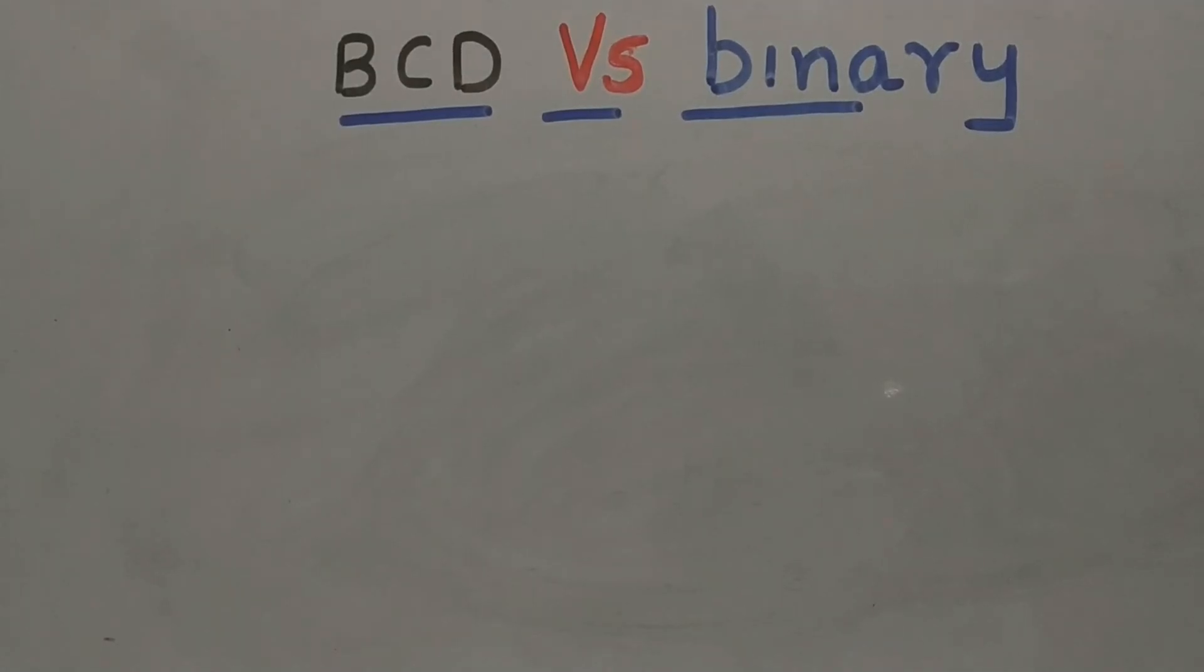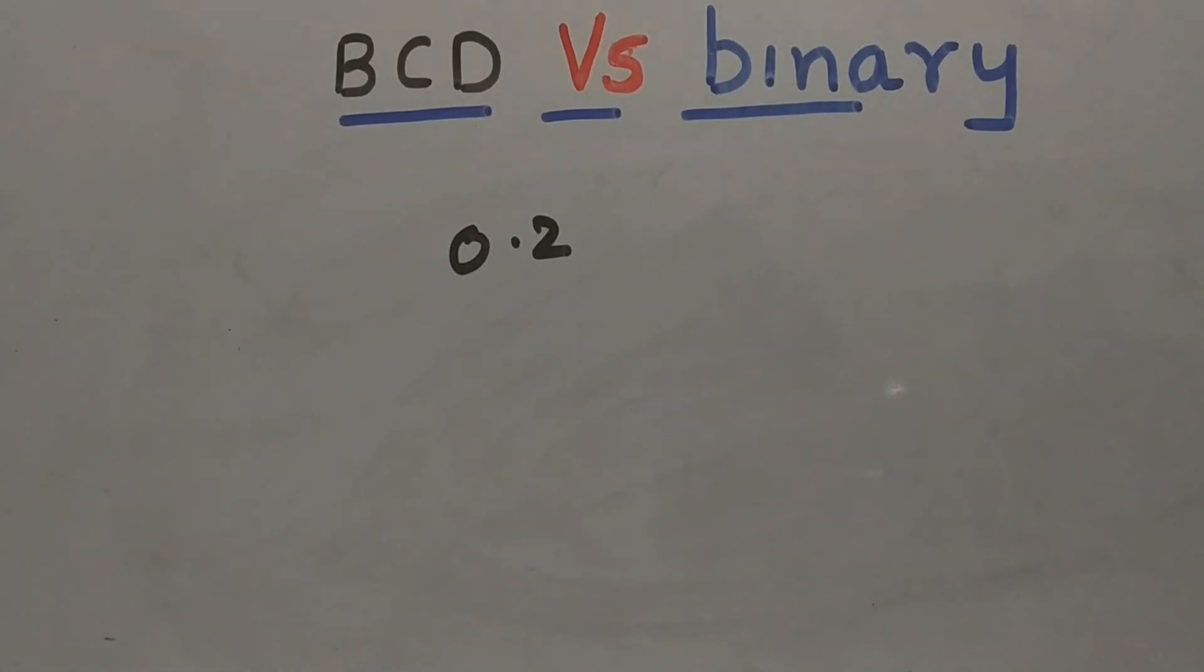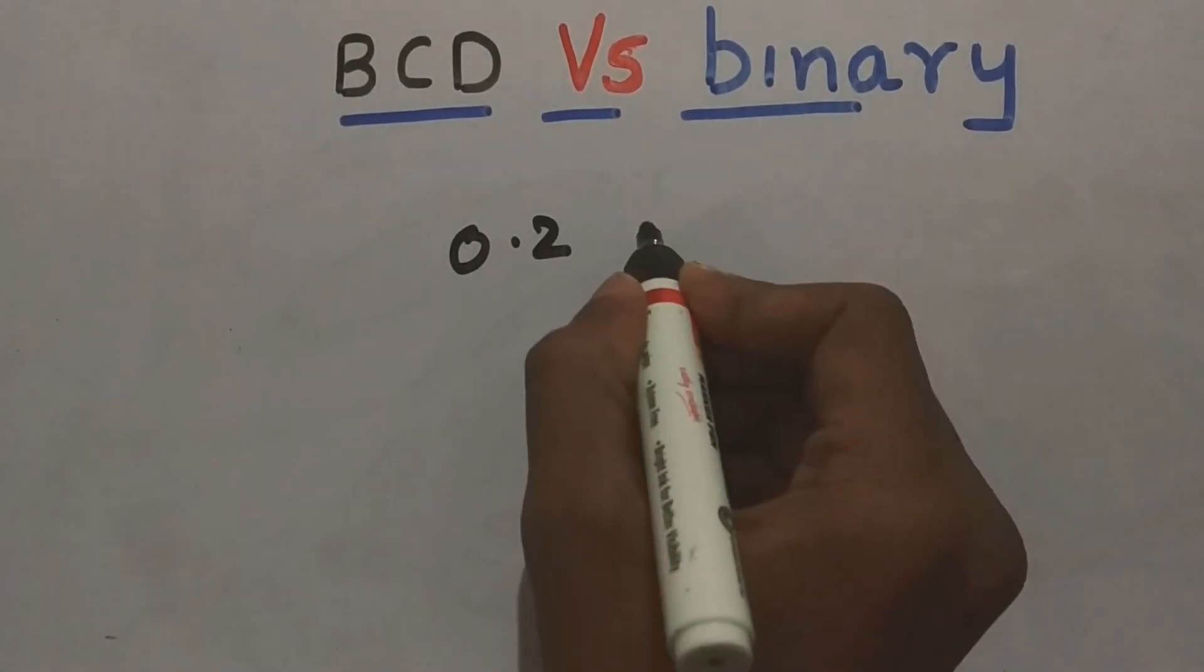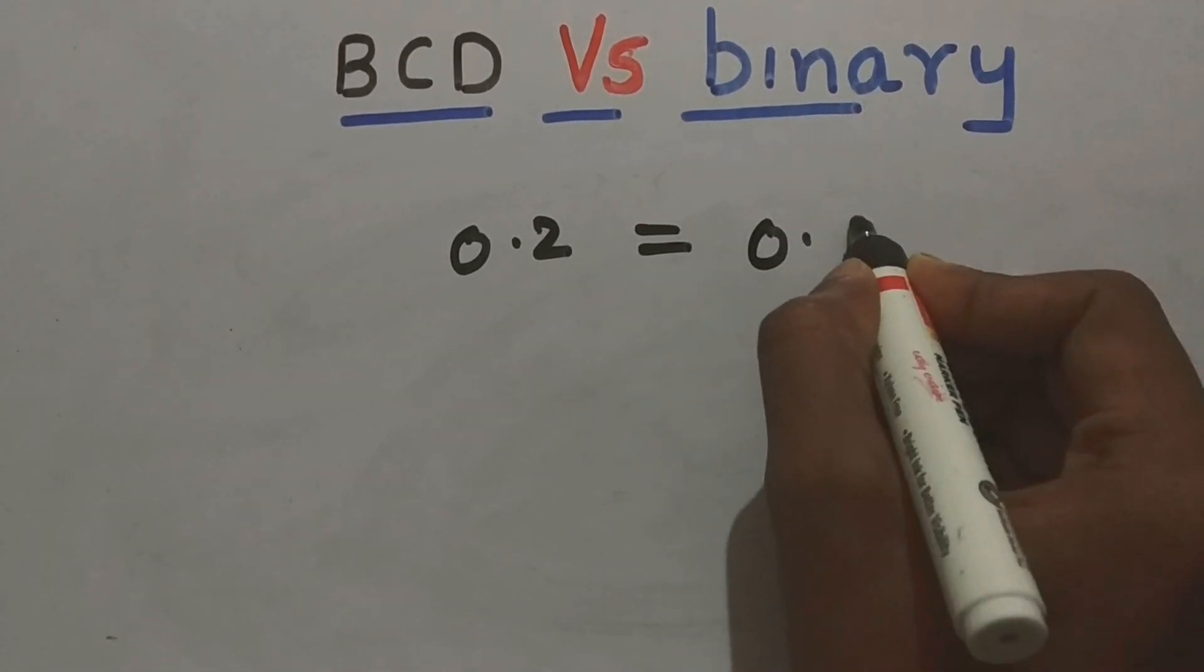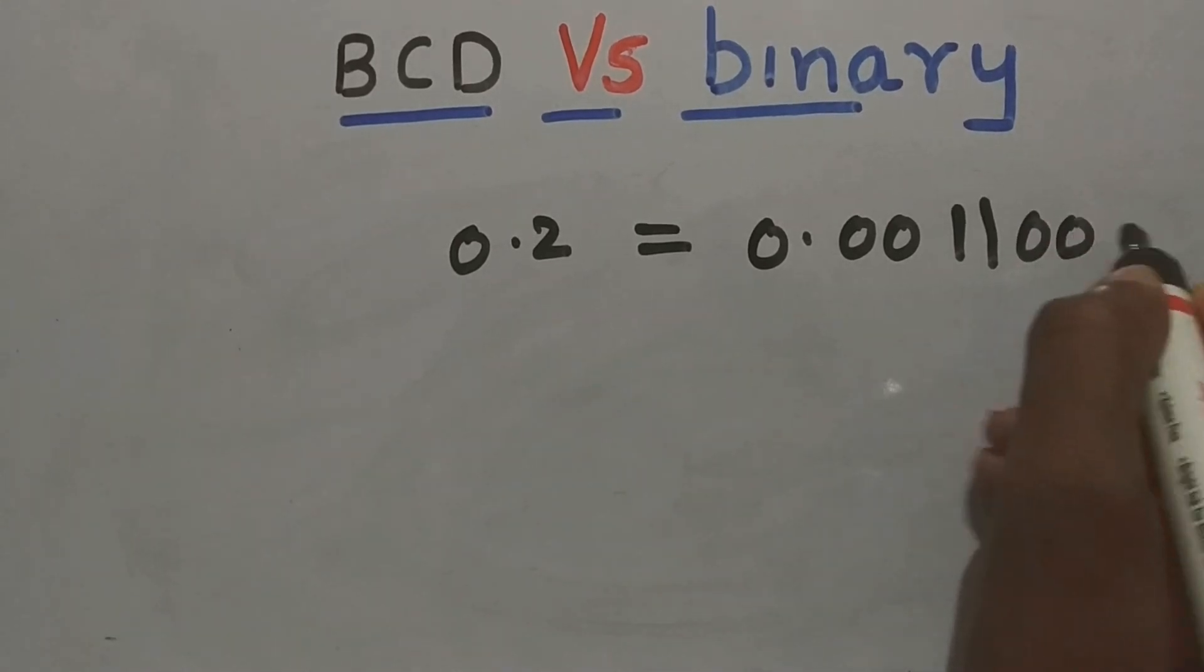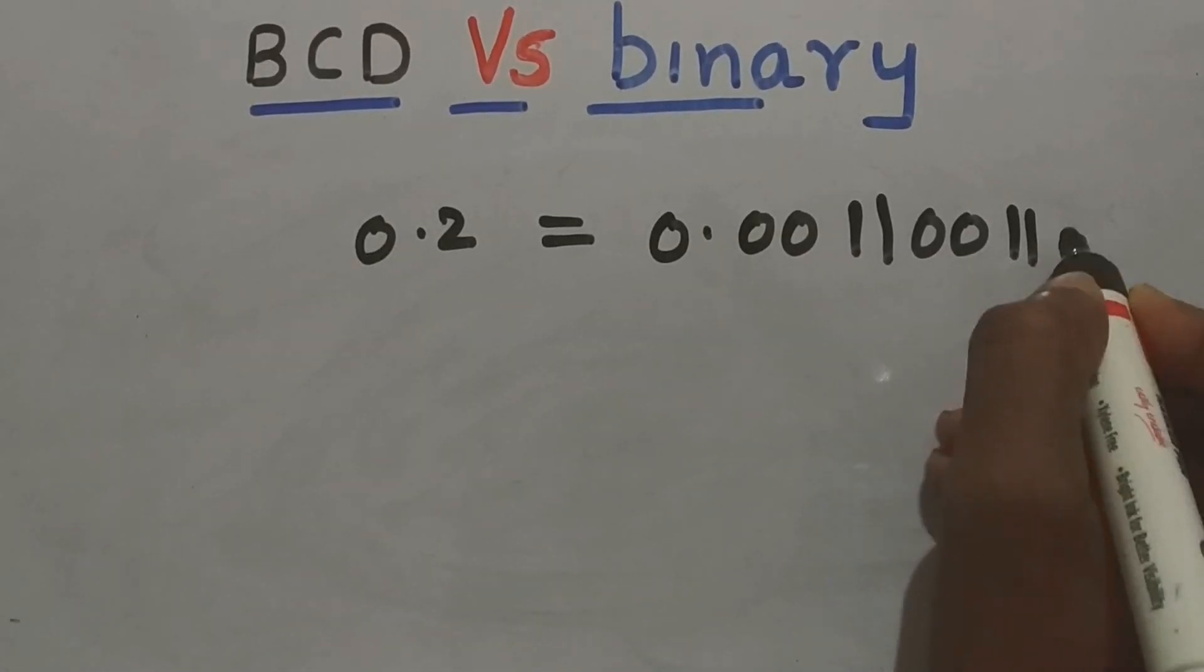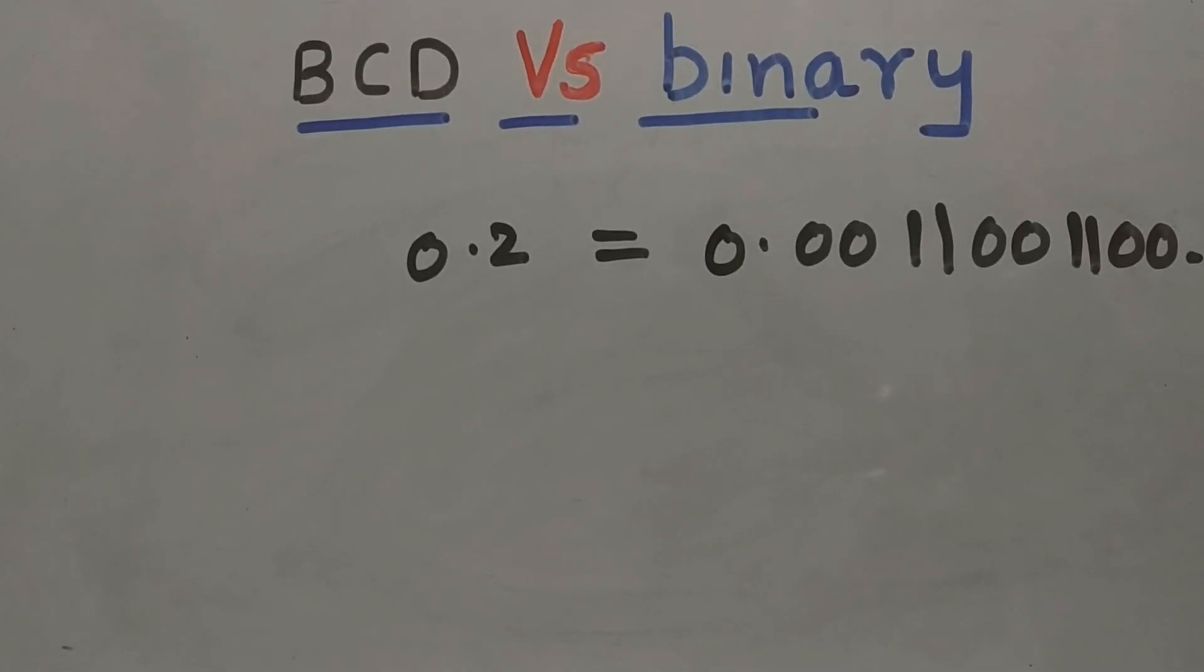Another major advantage of BCD over binary is that, for example, if you want to represent 0.2 in binary, what will be the value? In binary, if we keep on doing this, we will get the value as 0.0011001100. You won't stop, there is no rounding off in binary.